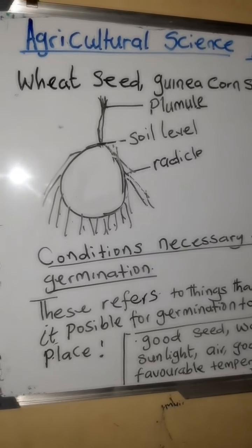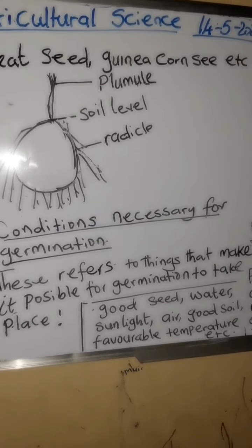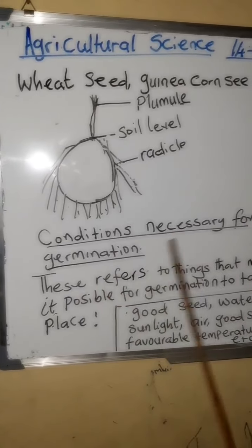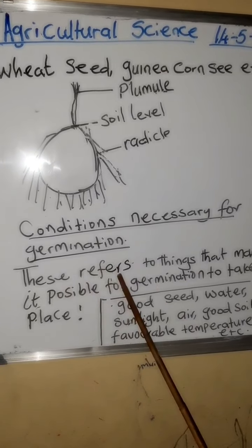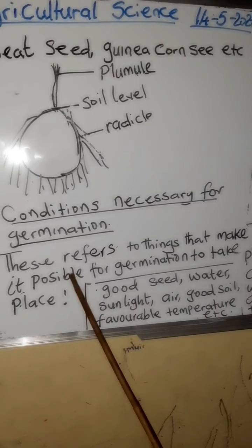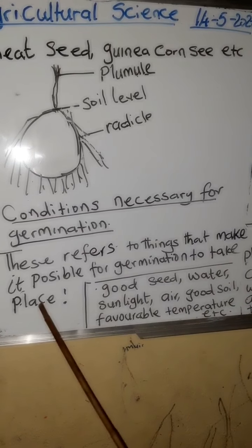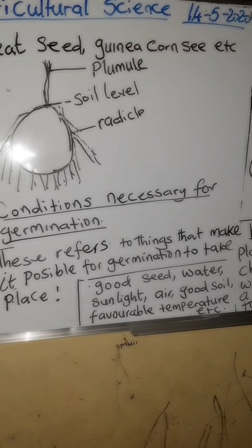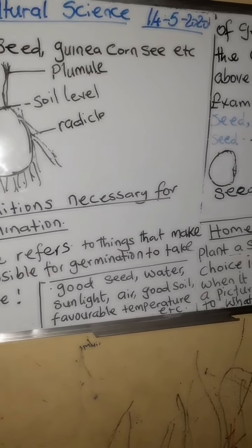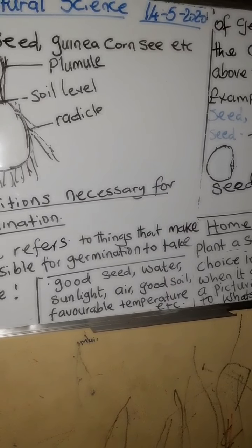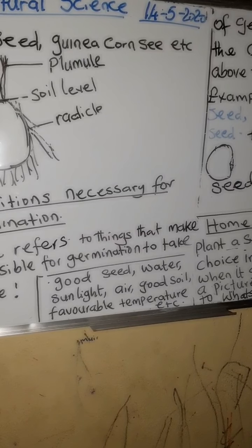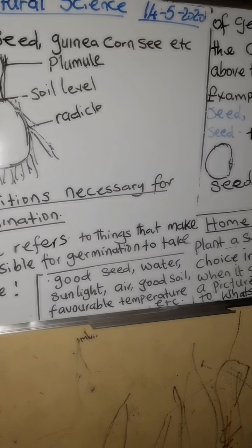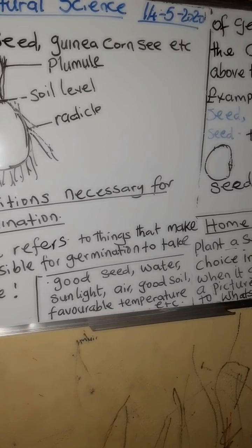Let's look at the conditions necessary for germination to take place. These are things that make it possible for germination to occur. Number one: good seed. You have to have a very good seed to plant. Select your seed carefully — do not use a bad seed. You have to use good seed so that it will yield a good growth of a plant.